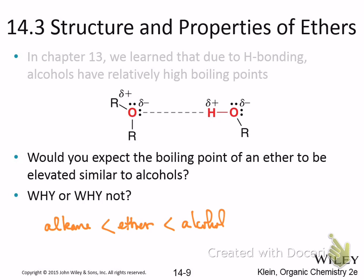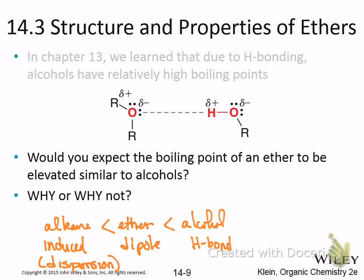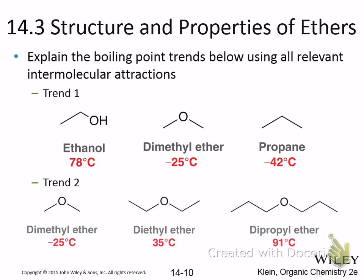In terms of intermolecular forces, alkanes have van der Waals or induced dipole forces; ethers have dipole interactions; and alcohols have hydrogen bonding. Ethanol has a boiling point of 78°C; dimethyl ether is 25°C; and propane is the lowest because it lacks any real strong intermolecular force — all these have similar molecular weights.